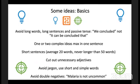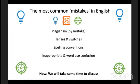One key idea per paragraph. Cut out unnecessary adjectives, avoid jargon, use short and simple words. Avoid double negatives — we see this a lot in editing work. For example, 'malaria is not uncommon' when the authors mean 'malaria is common.' Try to cut those out of your writing. These are basic ideas to consider the next time you put your articles together.